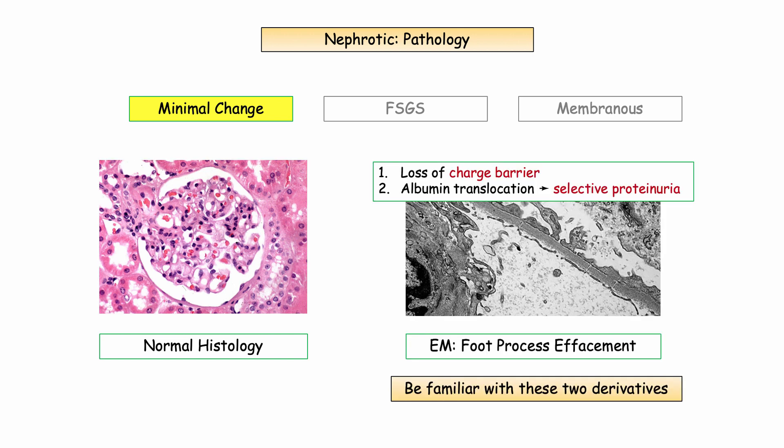Insofar as electron microscopy, this was reviewed in the introductory video. EM demonstrates foot process effacement. Rather than identifying effacement on an image, they will query you on the two key derivatives: loss of charge barrier and the presence of selective proteinuria. Be familiar with this language.